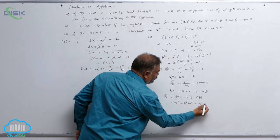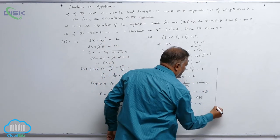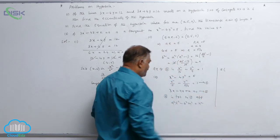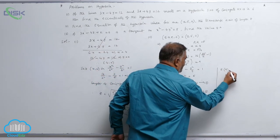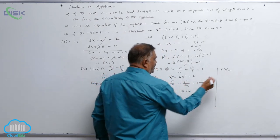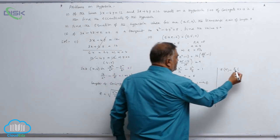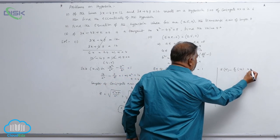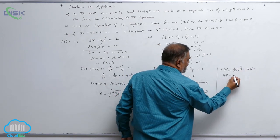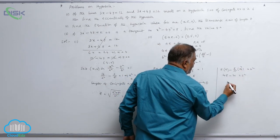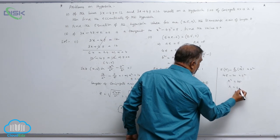Here a² equal to 5, l equal to 3, b² equal to 5/4, m equal to 4 (so m² equal to 16), and n equal to k. Substituting: 5 times 9 minus (5/4) times 16 equal to k², giving 45 minus 20 equal to k². Therefore k² equal to 25, and k equal to ±5.